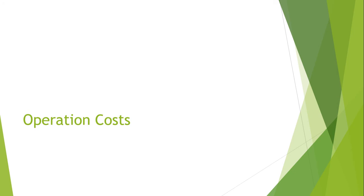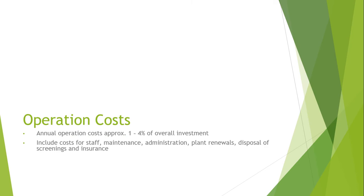In optimally designed and low maintenance hydroelectric power stations, the operation costs are typically very low. Variable costs occur for example for staff, maintenance, administration, provisions for plant renewals and disposals of screenings, and insurances. The individual cost allocation can vary a lot from plant to plant depending upon the local conditions.